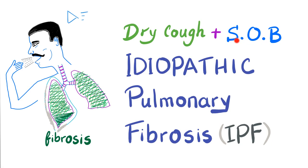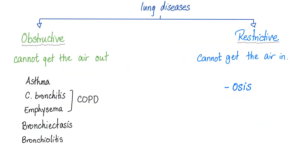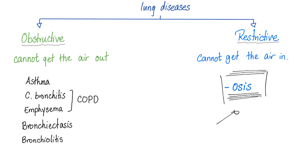Symptoms include dry cough and SOB — shortness of breath. Now let's get started. Lung diseases are divided into obstructive and restrictive. Obstructive: I cannot get the air out. Restrictive: I cannot get the air in. Examples of restrictive lung disease include any lung disease that ends in -osis, such as pneumoconiosis, asbestosis, silicosis, berylliosis, and even idiopathic pulmonary fibrosis.